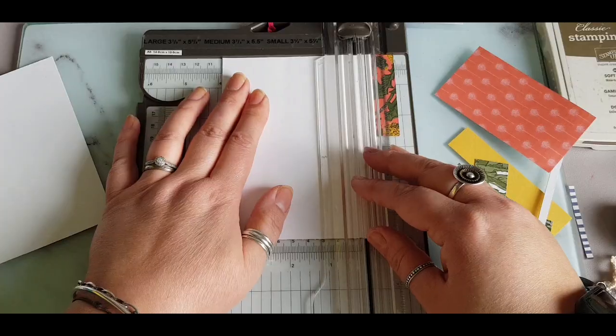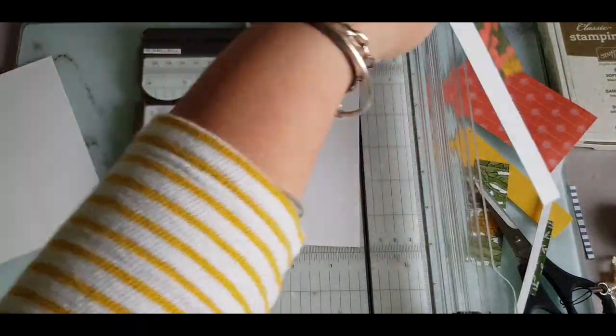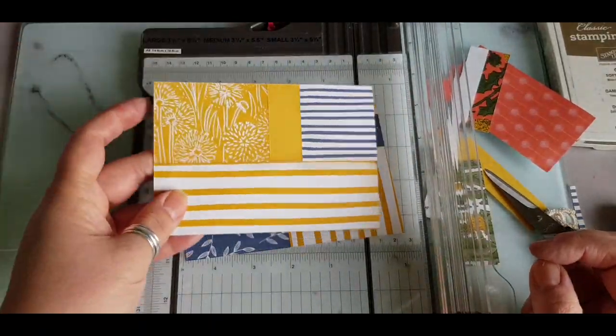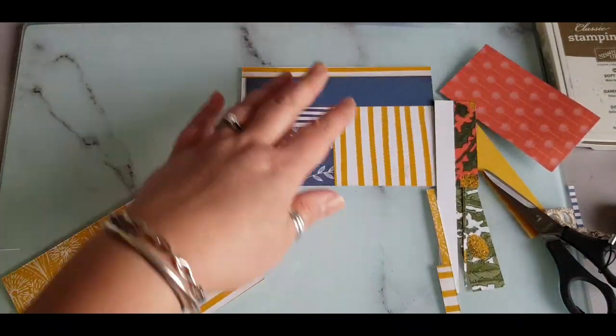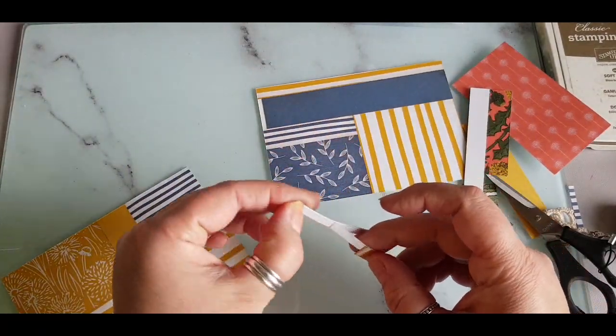Once I've done that I'm cutting these down to a smaller mat and layer at 5 5/8 by 3 7/8. And now I have two pieces to work with.